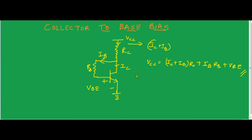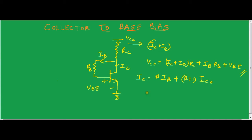Our next step: we know that IC is equal to beta times IB plus (beta plus 1) times ICO. This is the equation of IC, the collector current. There is also the reverse saturation current which has a role to play, so we have included that into the equation.